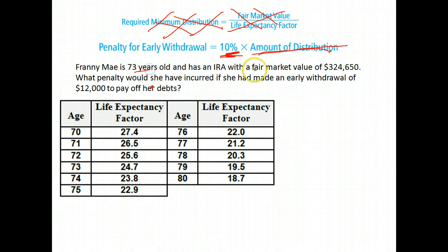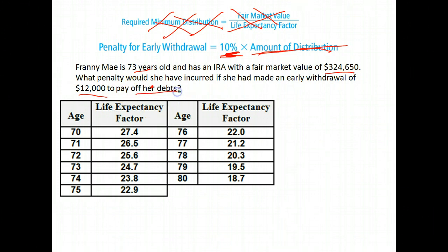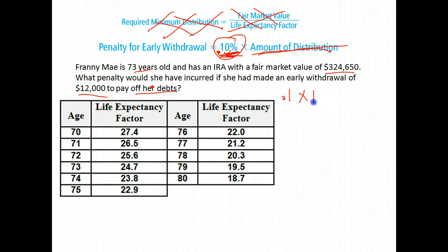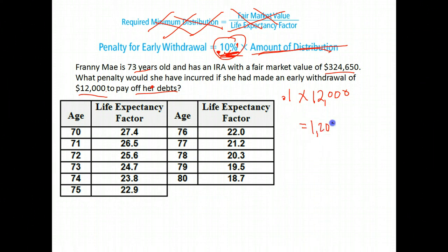Here's Fannie Mae. She's 73 and has an IRA with a fair market value of $324,650. What penalty would she incur if she made an early withdrawal of $12,000 to pay off her debts? Since it was not for education, she does have to pay a penalty of 10% of what she took out. Moving the decimal two places to the left gives us 0.1, and we multiply it by $12,000. Her penalty would be $1,200 for taking that money out early.